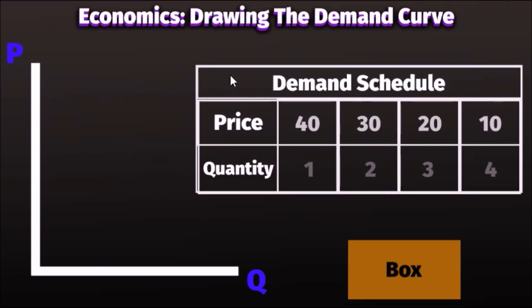Now as you notice, price is this Y variable and quantity is this X variable. That means we can treat each of these data sets as a coordinate system.